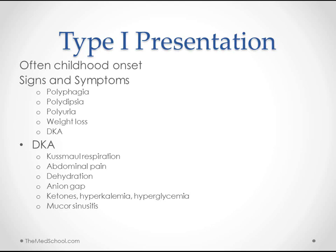These kids often come in with Kussmaul respirations — long, slow, deep breaths — along with abdominal pain, dehydration, and an anion gap acidosis. In labs, we're going to see ketones, elevated potassium, and hyperglycemia. Sometimes these numbers are in the seven or eight hundreds, even the thousands. Mucor sinusitis is a potentially life-threatening condition that is often associated with DKA.